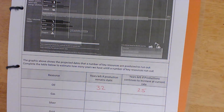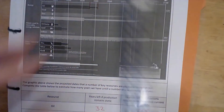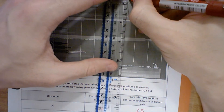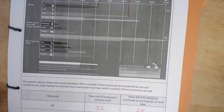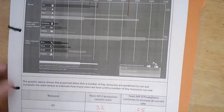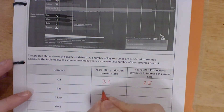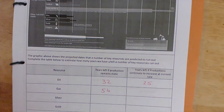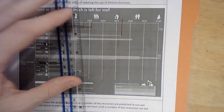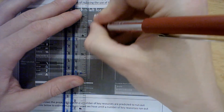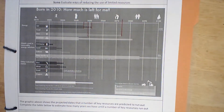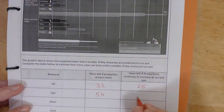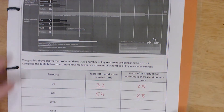Natural gas: if production remains static, that will last until about 2074, giving us 54 years of natural gas remaining. If we continue to use it at the rate at which we are using it, it's going to run out far sooner — I'll make that 2048, so only 28 years of natural gas left.